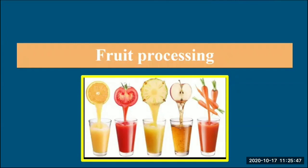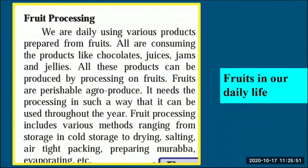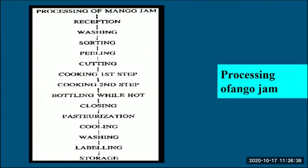Fruits are used daily in various processed products like chocolates, juices, jams, and jelly. Fruits are perishable agro produce that can get spoiled, so they need processing to be used throughout the year. Fruit processing includes various methods ranging from cold storage, drying, salting, airtight packing, preparing murabba, and evaporating.